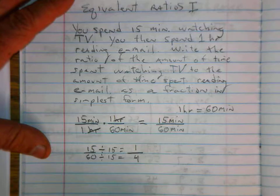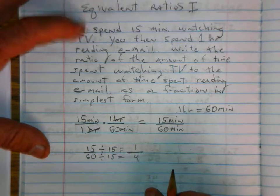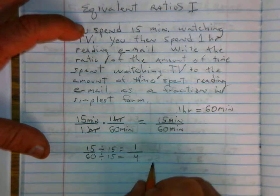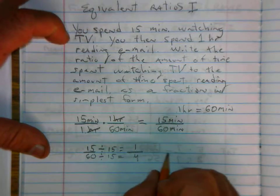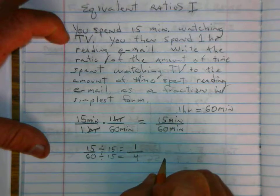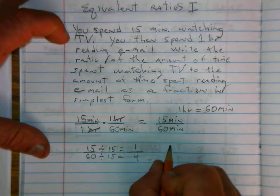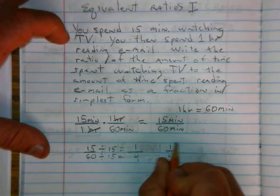So our ratio of watching TV to reading email is one to four. Our final answer is one fourth.